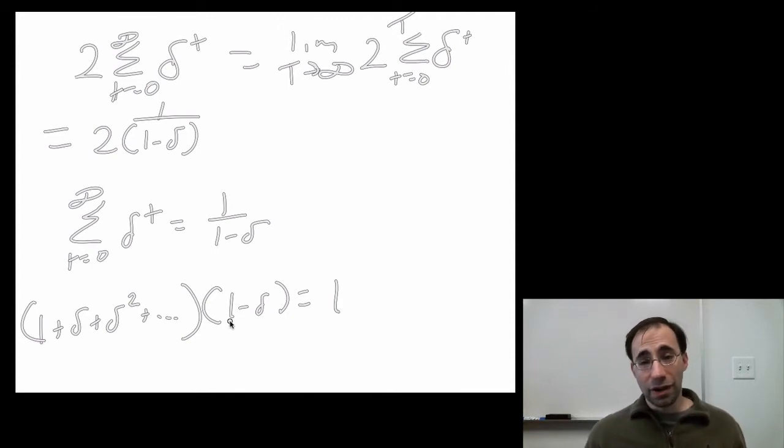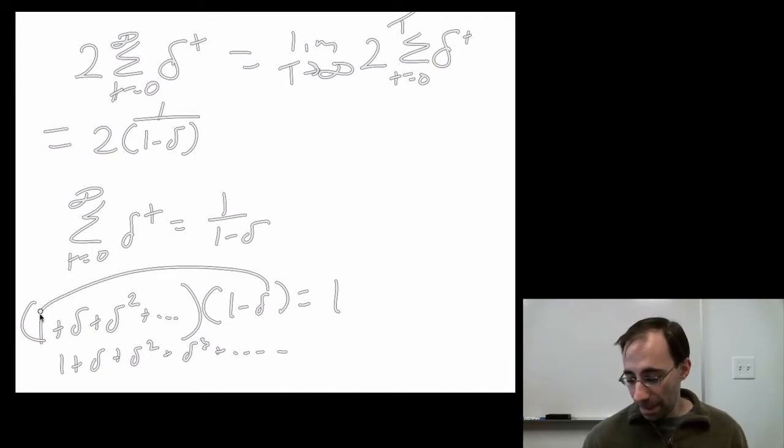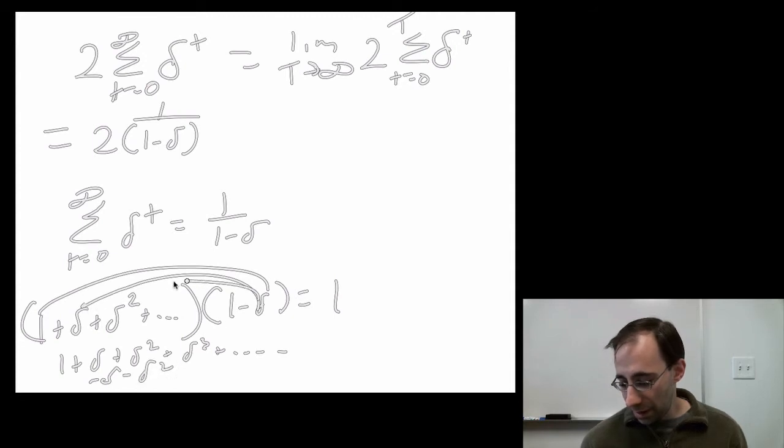Now, this is a much longer thing to expand out, but it follows a pattern we can utilize. If you multiply all the ones first, we get 1 plus delta plus delta squared plus delta cubed plus forever. The negative deltas give you negative delta, negative delta squared, negative delta cubed, forever. When you add them all up together, everything cancels but the 1, so we've shown it.